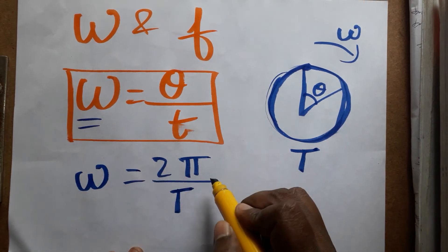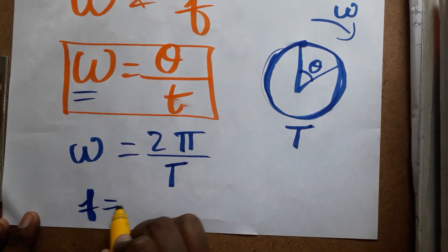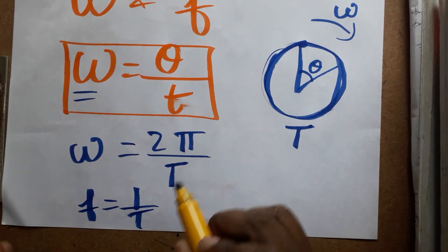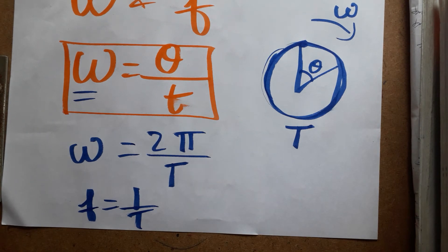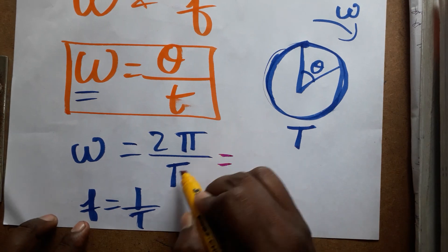This equals omega. Frequency is equal to the number of oscillations produced in one second, so f is equal to one divided by time period. We can take one divided by time period as frequency.